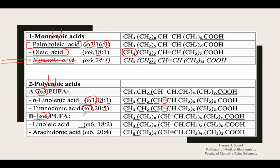Now shifting to omega-6 PUFA — polyunsaturated fatty acid. Linoleic is omega-6. Counting from the omega carbon: the methyl group is number one, then four CH2 groups repeated, making five, and the next carbon is number six. So omega-6 means the double bond is between carbon number 6 and 7. Linoleic has 18 carbons and two double bonds — two because the bracket in the structure is repeated twice.